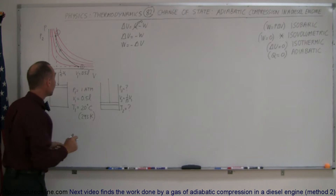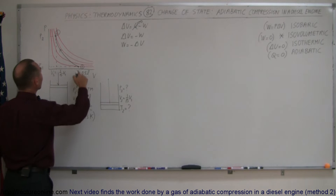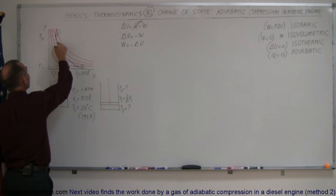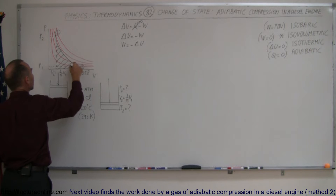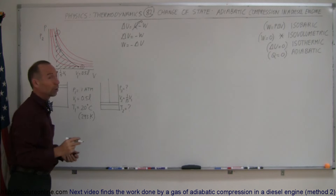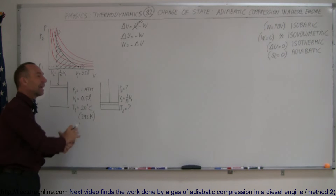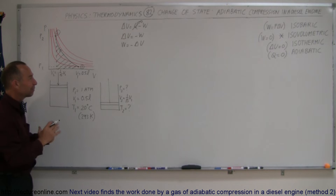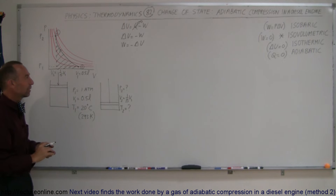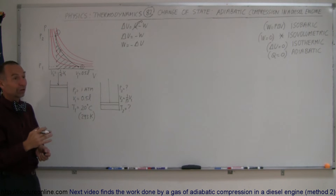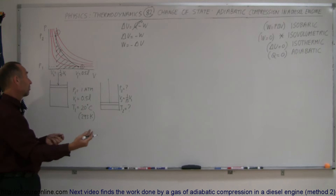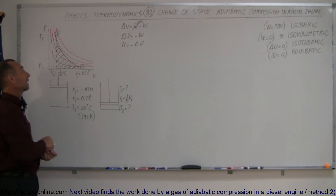Since we're compressing the gas, the work done is always the area underneath the curve, but since we're going from right to left, the work done will be a negative quantity. We're actually adding energy to the gas by compressing it, so that is negative work done by the gas — because actually we're doing work on the gas.